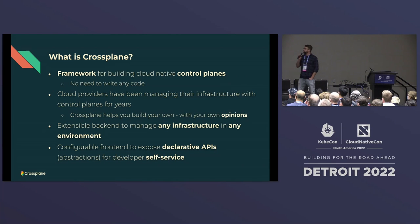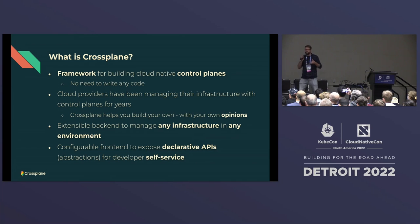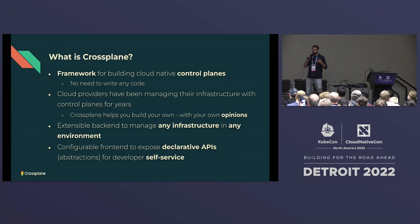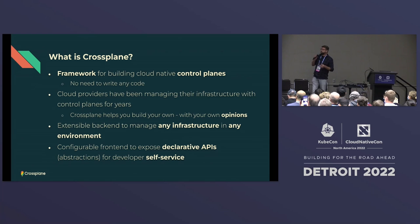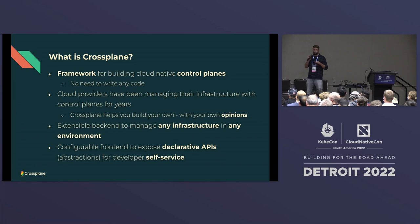When you think about what Crossplane is, the best way to think about it is that it's a framework you can use to build a cloud-native control plane. The intent is that you can do that in a declarative way without writing any code — though you can write code for more custom scenarios. Cloud providers have been building and using control planes to manage their infrastructure for years. With Crossplane, we're hoping to enable you to build your own control plane and put your own opinions into it.